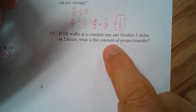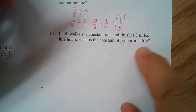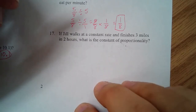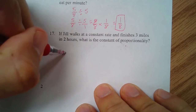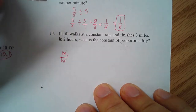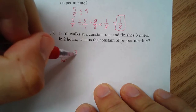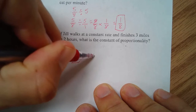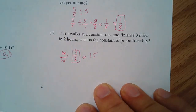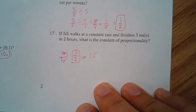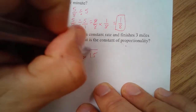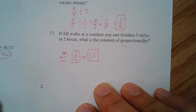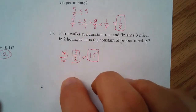Number 17: Jill walks at a constant rate, finishing 3 miles in 2 hours. The constant of proportionality is miles per hour: 3 miles divided by 2 hours is 3/2 or 1.5 miles per hour. Labels are very important here.